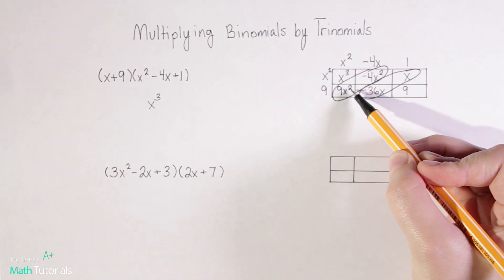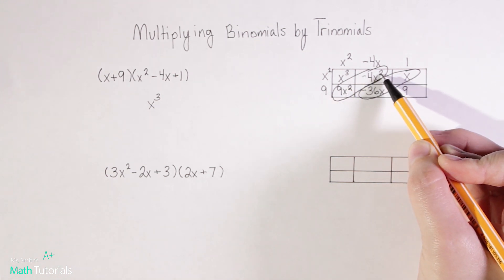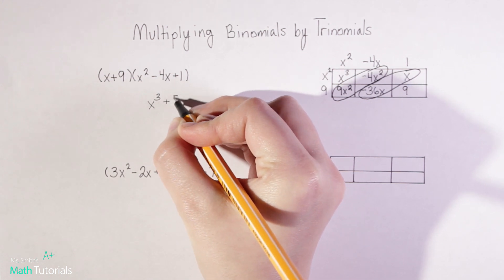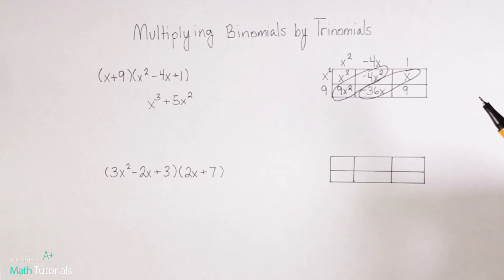Next, I've got my x squared. So I've got nine x squared minus four x squared. So nine minus four is positive five x squared. Remember when we're adding or subtracting, we keep the variable and exponent the exact same.